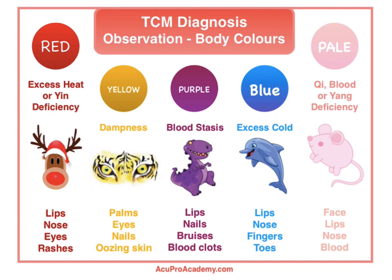Purple is always blood stasis. Purple nails indicate liver blood stasis because the liver reflects in the nails. Purple lips indicate blood stasis affecting the digestive system, especially the stomach. Purple bruises all over the body — easy bruising — can come from the spleen not holding blood within the blood vessels, or from trauma creating blood stasis. Big blood clots in menstrual blood also show blood stasis. Bluish color is usually excess cold — if there's excess cold, it congeals circulation and can create blood stasis, so often we see bluish-purple together.